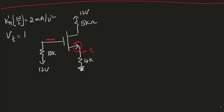Another important point I've been stressing: IG is always 0. The gate current is always zero no matter what, because there is an insulation layer here that won't allow any current. Now since IG is 0, VG must be 12 volts — the voltage at that point must be 12 volts.